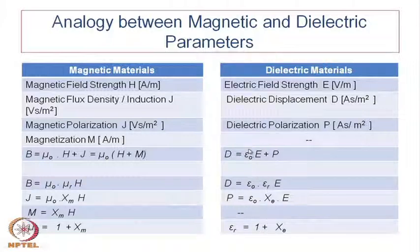B = μ₀H + J = μ₀H + M, and similarly dielectric displacement D = ε₀E + P. J is polarization here and P is polarization there. One can write B = μ₀μrH and D = ε₀εrE. Polarization can be expressed in terms of susceptibility: μ₀χmH for magnetic and ε₀χeE for dielectric. The relationships μr = 1 + χm and εr = 1 + χe show that the two phenomena are very similar in nature.